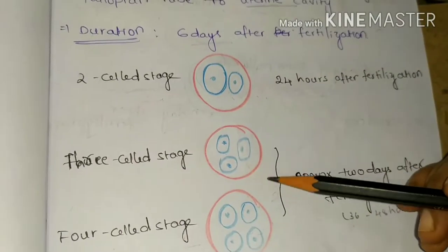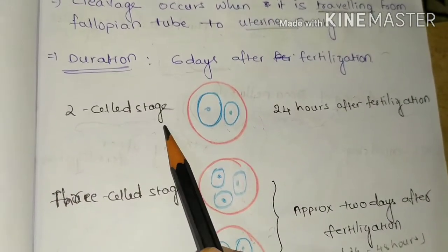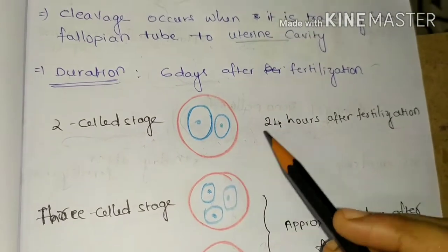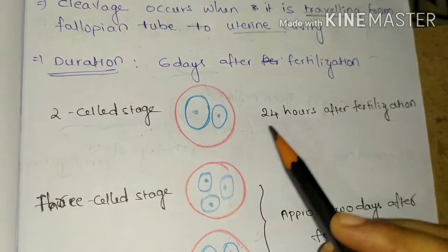These are the stages of cleavage. First stage is two-cell stage. In this stage, the zygote is divided into one large cell and a small cell. This stage is observed after 24 hours of fertilization.